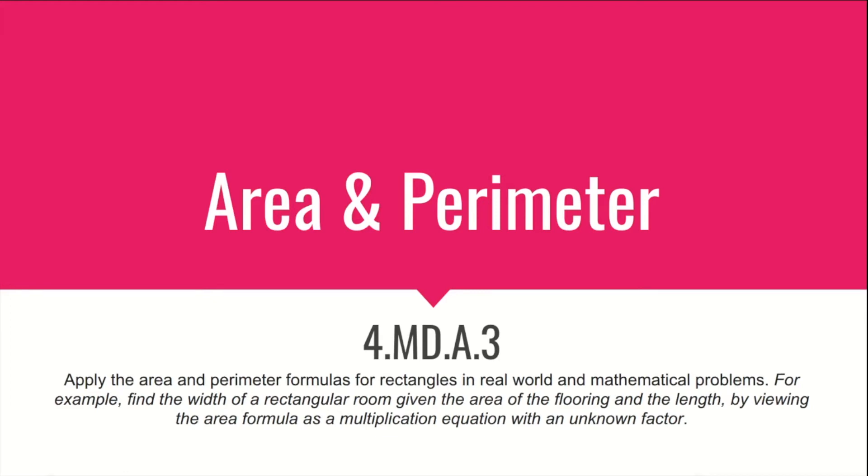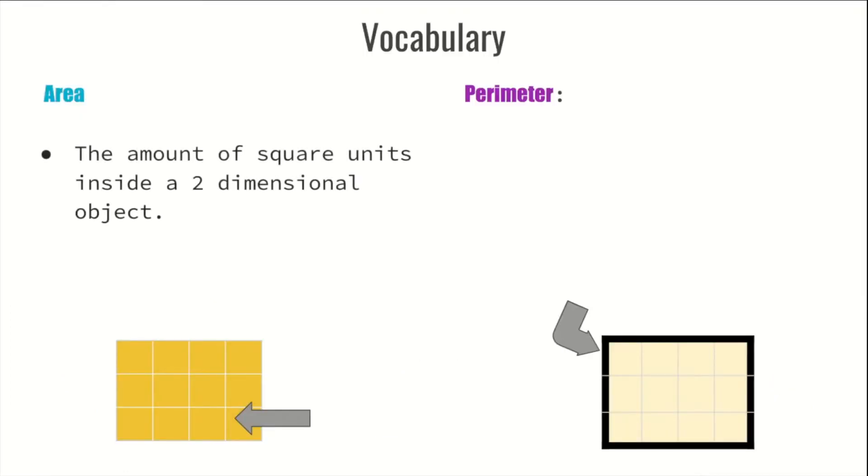Area and perimeter. What is area? Area is the amount of square units inside of a two-dimensional object. So to find area you're gonna multiply